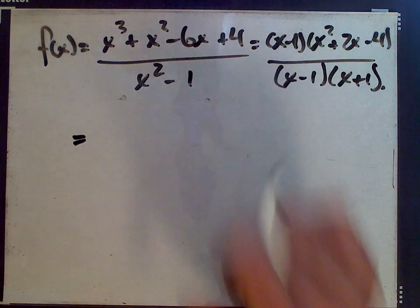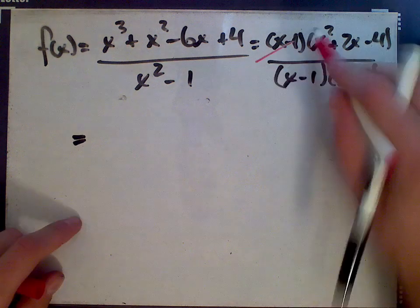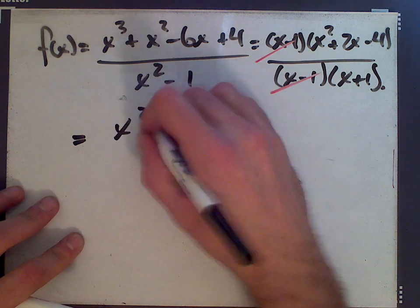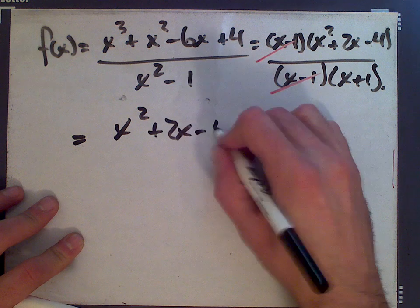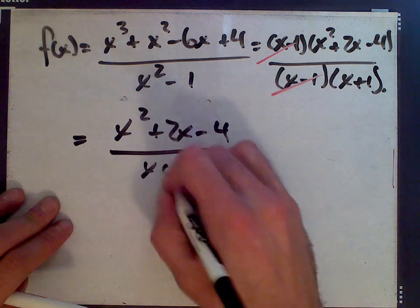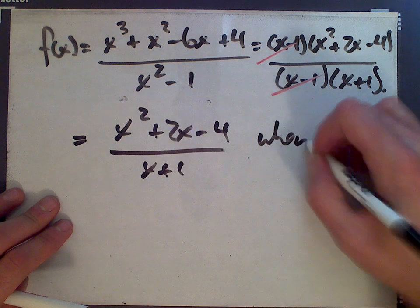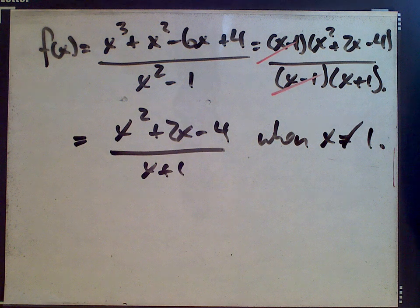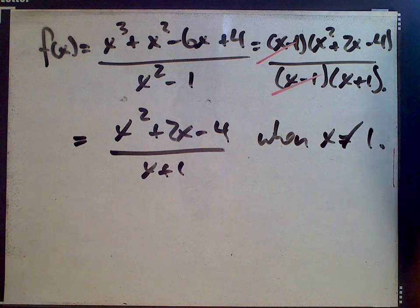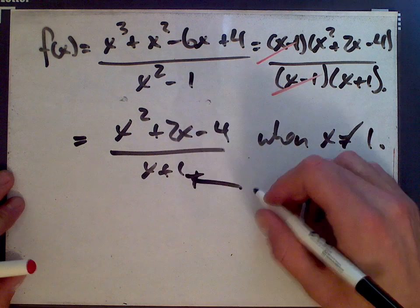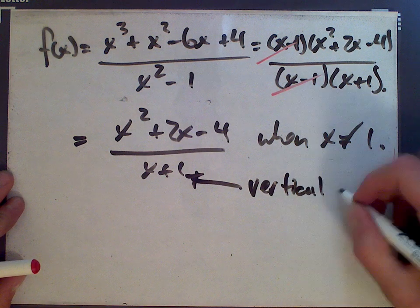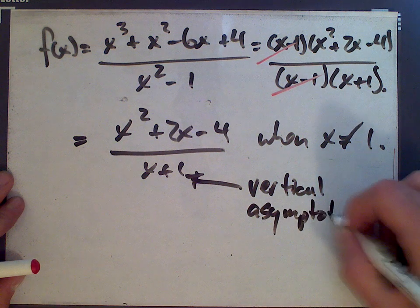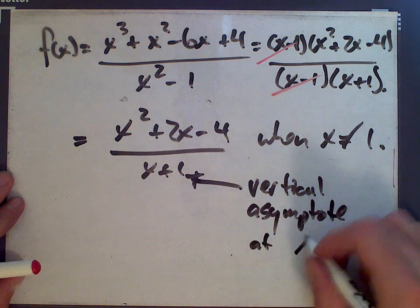So basically when x isn't 1, we can cancel these factors here. So this function equals x squared plus 2x minus 4 over x plus 1, when x is not equal to 1. So there's a hole at x equals 1. And there's a vertical asymptote now where this is 0.